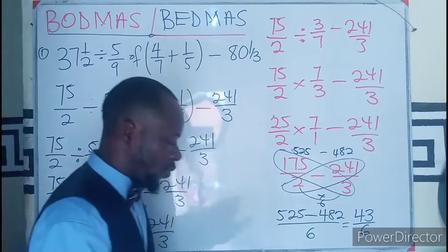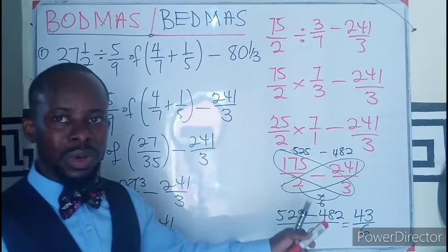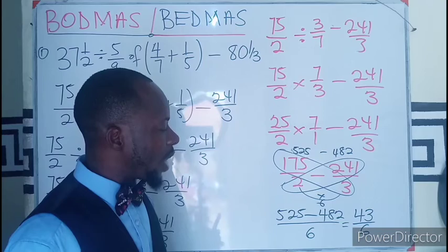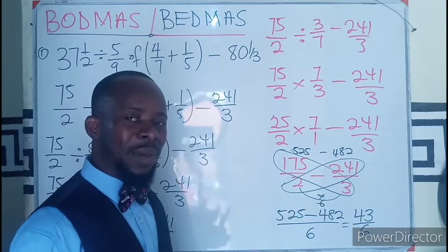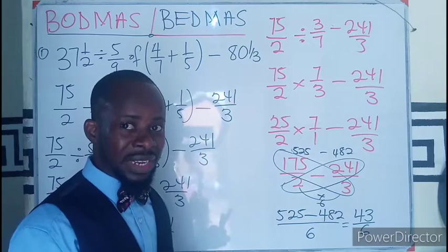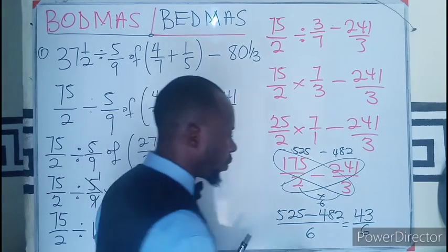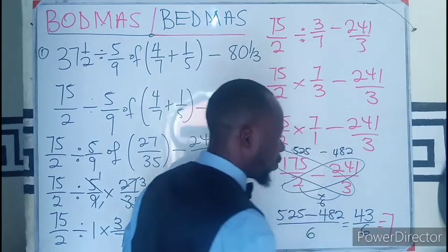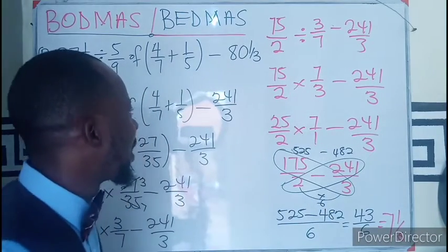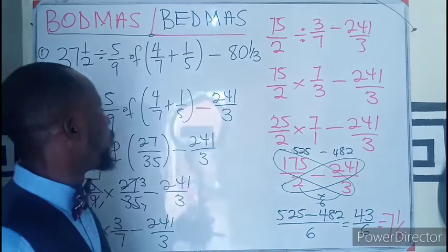And this could be our answer, but we can still change this to become a mixed fraction. So how many 6 can we get in 42? I believe we can get 7. That is 7 times 6 equals 42. So this is going to be 7 whole number, 1 out of 6 as our answer.